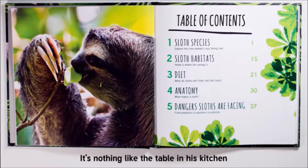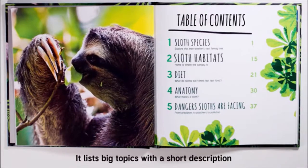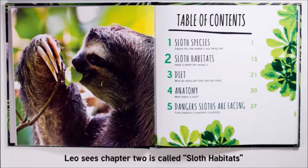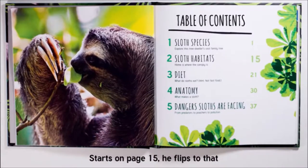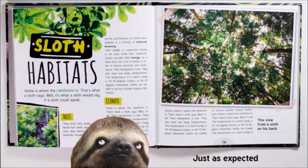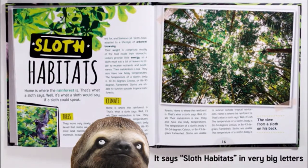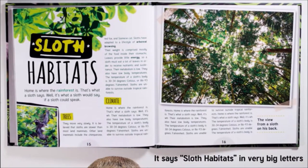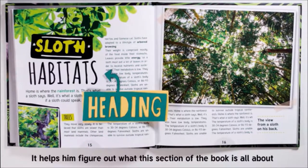It's nothing like the table in his kitchen. It lists big topics with a short description. Leo sees chapter two is called Sloth Habitats. Starts on page fifteen. He flips to that at the top of the page. Just as expected. It says Sloth Habitats. Very big letters. That's called a heading. It helps him figure out what this section of the book is all about.